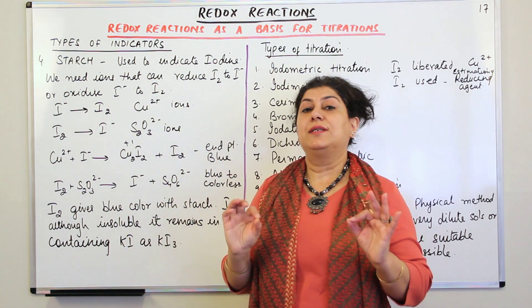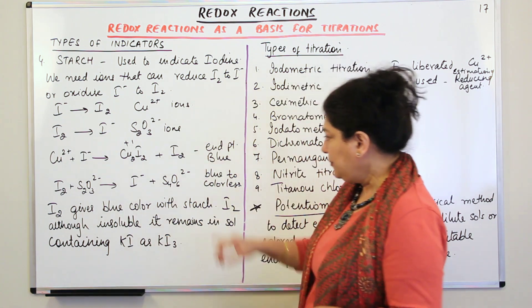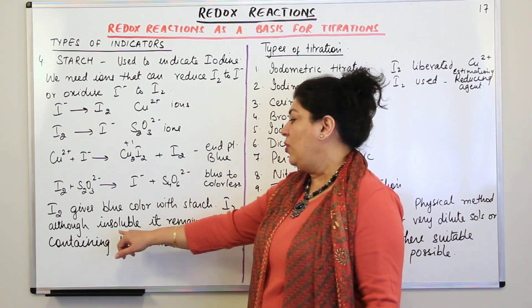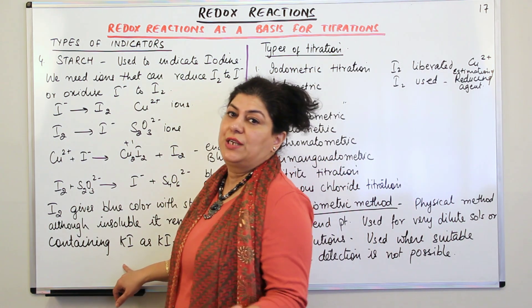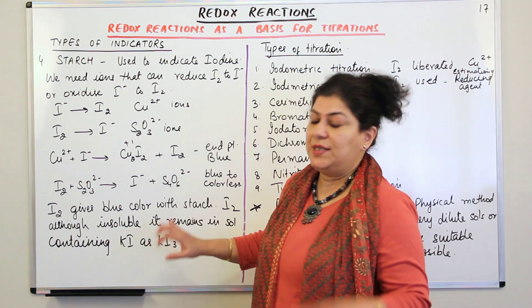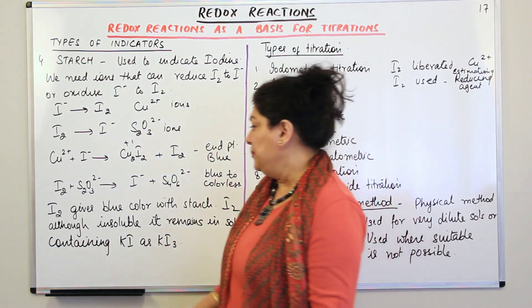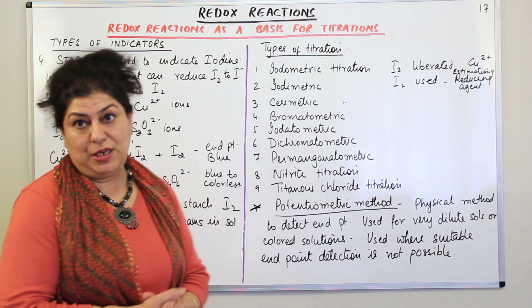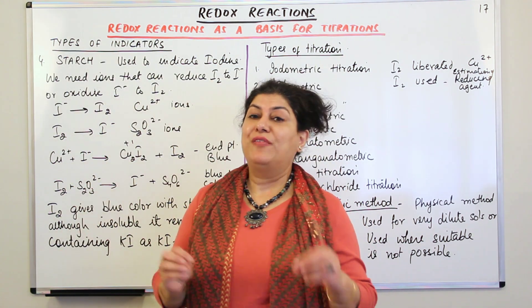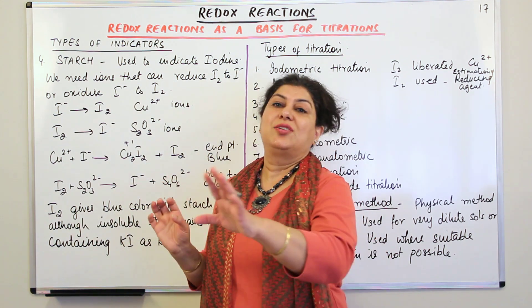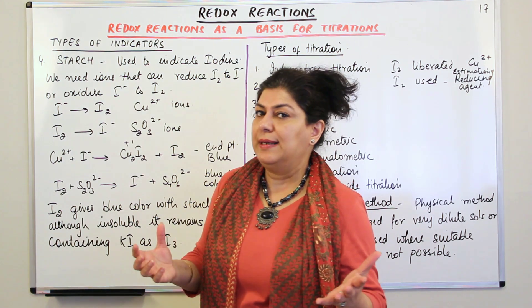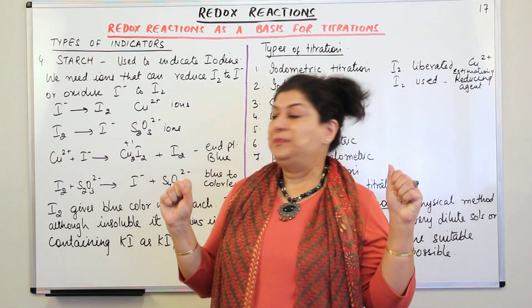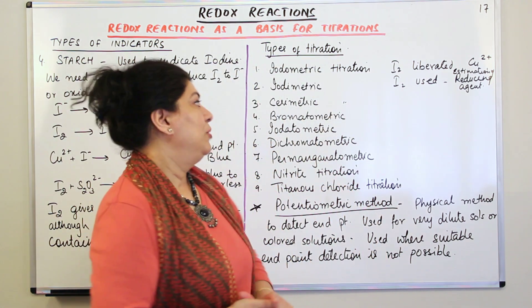You then use stoichiometric calculations to determine how much iodine was initially present. Therefore starch is used as an indicator only for iodine. At the end point it turns from blue to colorless. Iodine, although insoluble, remains in solution containing potassium iodide in the form of KI3. The details of this titration are not in your syllabus, so you just need to understand that it takes place in two steps: first the formation of iodine leads to blue color, and then reaction with thiosulfate uses up that iodine to give you its amount.